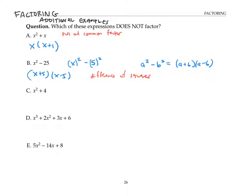The third one is a sum of two squares. There's no way to factor a sum of two squares over real numbers. So this is the one that does not factor.